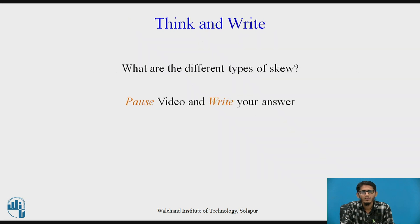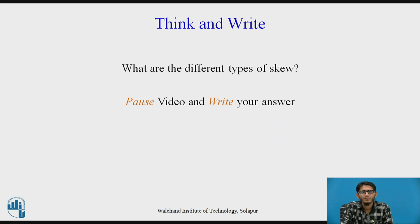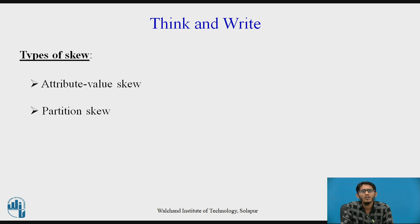Students are expected to think and write the answer to the following question: What are the different types of skew? You can pause the video and write the answer. The answer is: the two different types of skews are attribute value skew and partition skew.